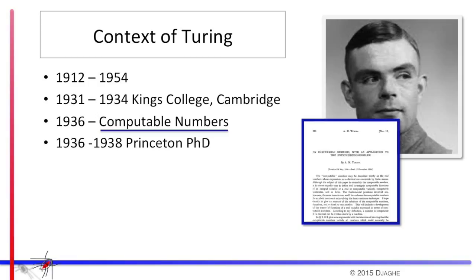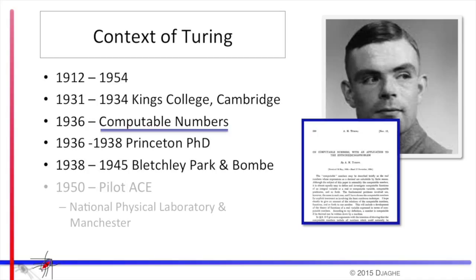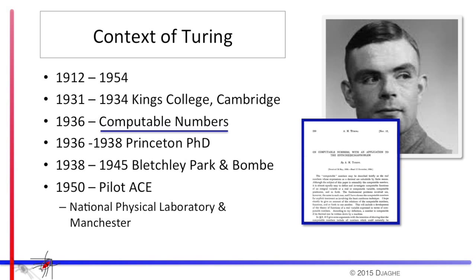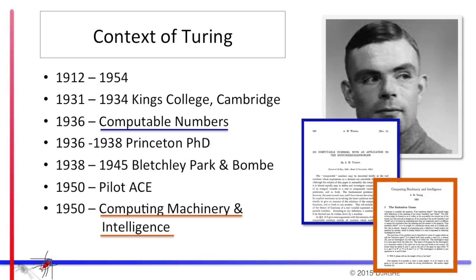He went from there to Princeton University in the United States, where he completed his doctorate. He returned to the United Kingdom in 1938. And between that year and 1945, he worked for the government as a codebreaker at Bletchley Park. After the war, he worked both at the National Physical Laboratory for a few years, and then at the University of Manchester. And it was during this period that he created his first full working computer, which was called the Pilot Ace. In 1950, he did his second major paper, computing machinery and intelligence.